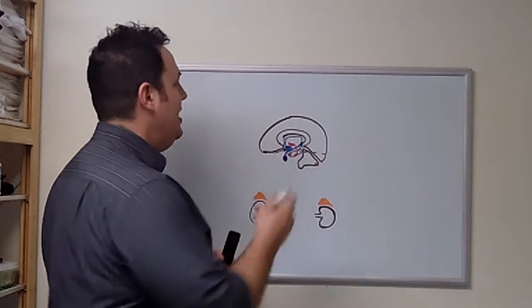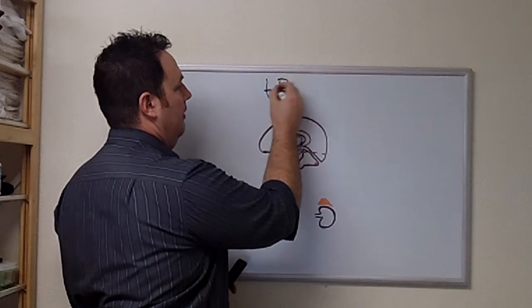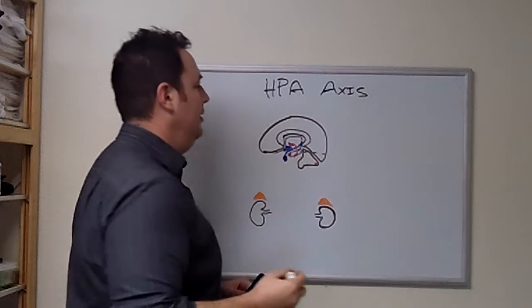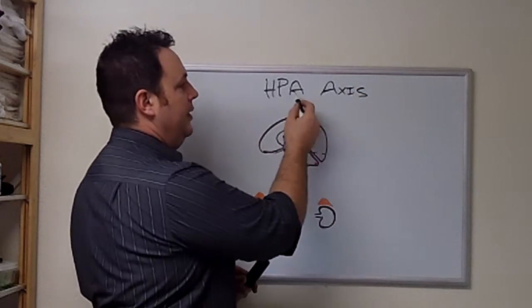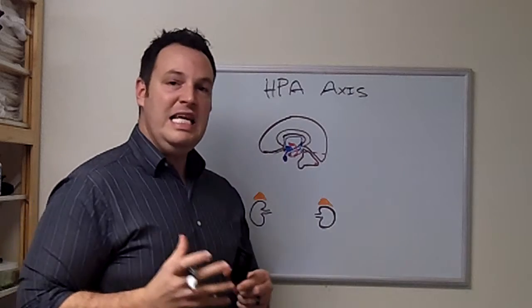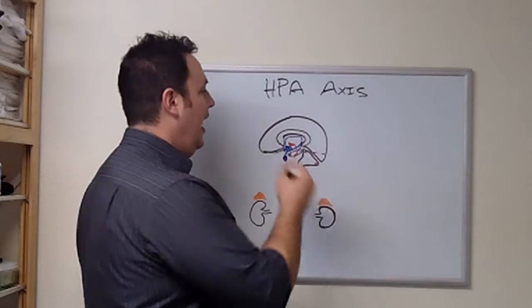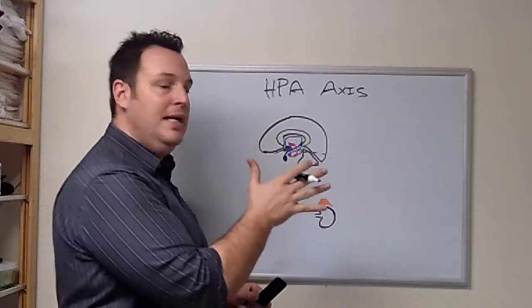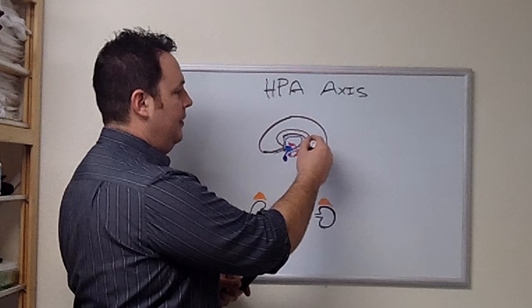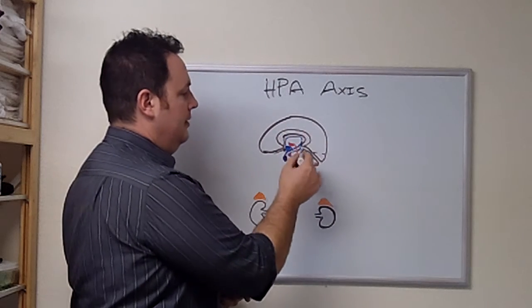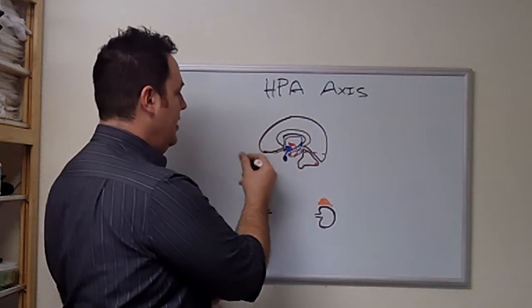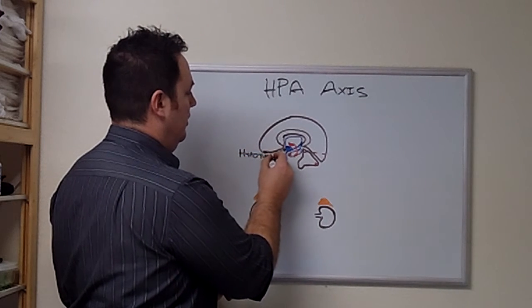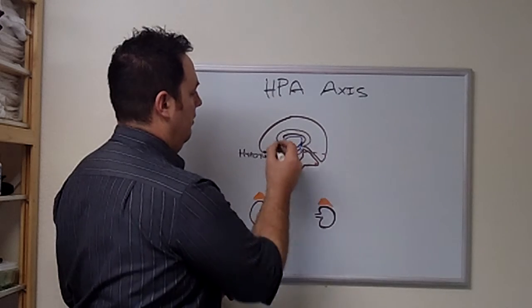The hypothalamic pituitary adrenal axis. The hypothalamus lies deep in through the brain. So it's hypo or below the thalamus. This is the medial cross section of the brain. Cortex up here, the corpus callosum, cerebellum, and then this blue guy right here is our hypothalamus.